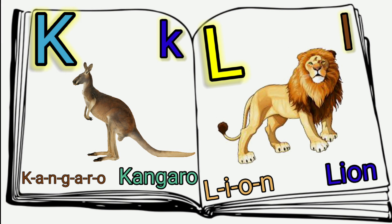K, A, N, G, A, R, O, O. Kangaroo. K is Kangaroo. L. L is Lion — L, I, O, N — Lion.